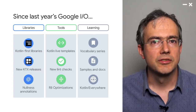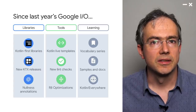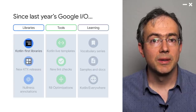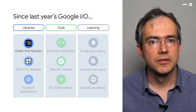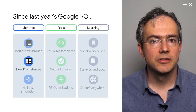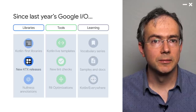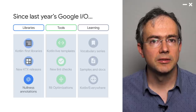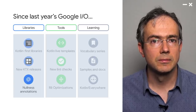Here is an overview of some of the ways we expanded Kotlin support in Android in the last year. On the library side, we added new Kotlin-first libraries such as Paging 3.0 and Jetpack Compose, as well as new Kotlin extensions for Play Core and Google Maps to make existing APIs more Kotlin idiomatic. In Android 11, we also added more nullness annotations to Android SDK APIs, making your calls to those APIs safer.